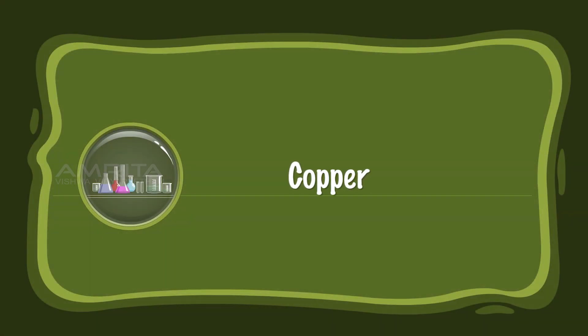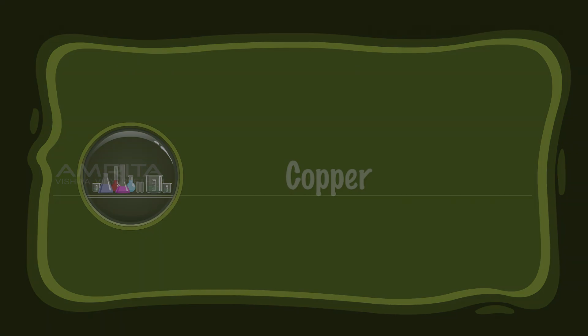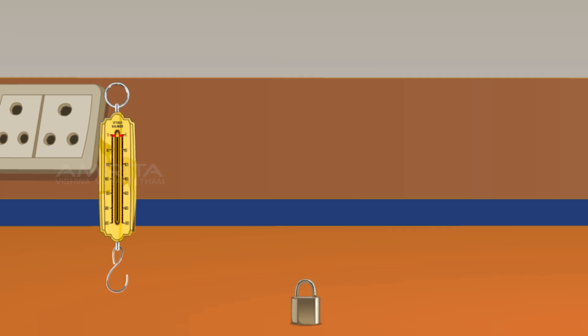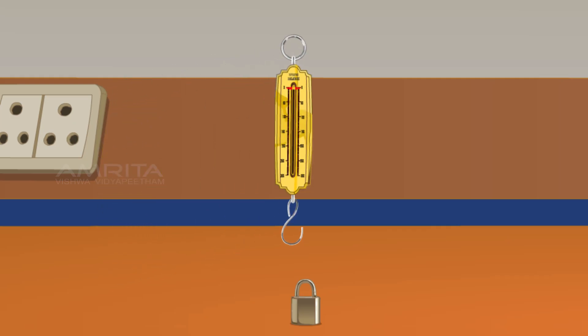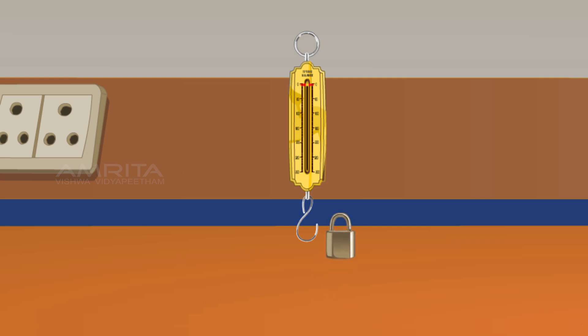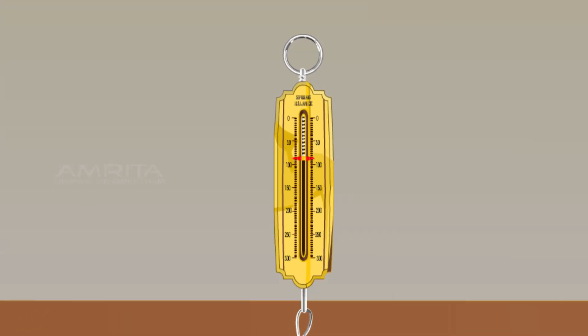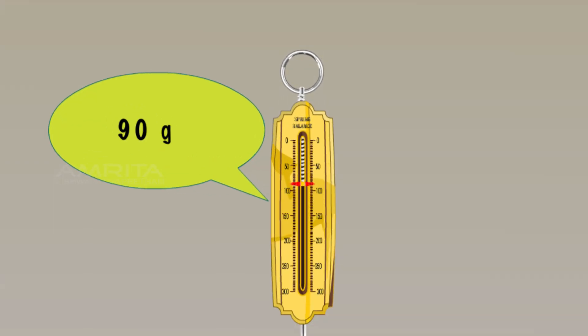Copper. Use a spring balance and a copper lock. Weigh the copper lock using the spring balance by suspending the lock from the hook of the spring balance. The mass of the copper lock is 90 grams.